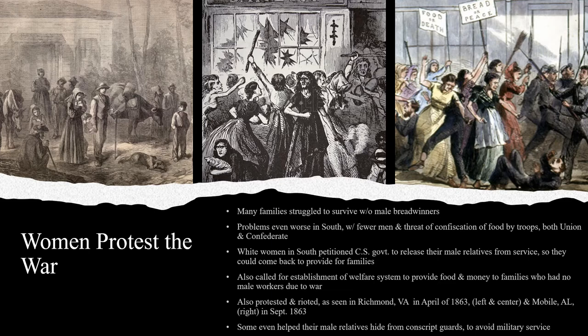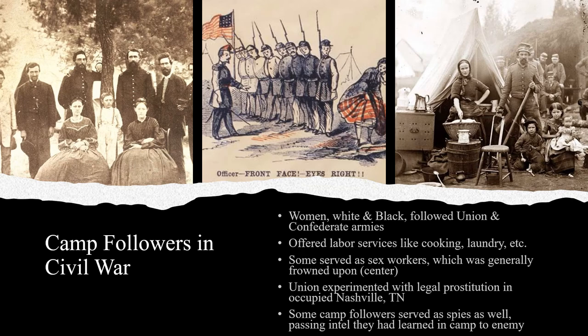Northern women, in contrast, petitioned the Union government to have their men released from service, but their petitions tended to be less successful because of the abundance of male immigrants who could take jobs left behind by men in the military. As was the case during the Revolutionary War, women also served as camp followers, providing important logistical services to troops in both armies. The tasks they saw included helping the sick and wounded, gathering and cooking food, washing and fixing uniforms, and — often illicitly — sex work, which was generally illegal, although some Union officers experimented with the legalization of prostitution. Black women, especially ex-slaves, served as camp followers in the Union army, while enslaved people often served their Confederate soldiers as slaves, not free people willingly making wages.